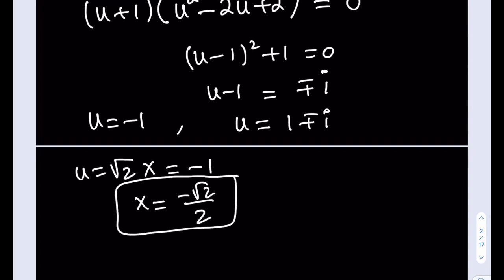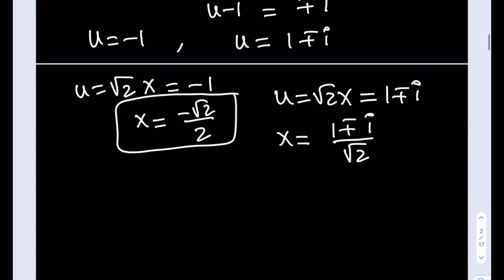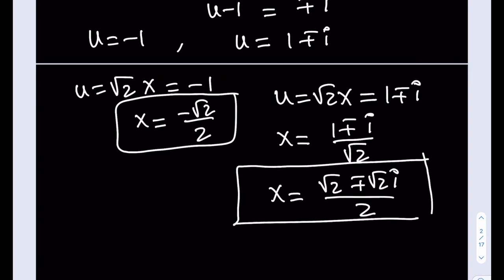And the complex solutions are going to be coming from this one. So if I go ahead and write it as 1 plus minus i, so now isolate the x by dividing both sides by root 2, and you're going to be getting this equation. If you want to rationalize the denominator, I mean, no big deal, but you're going to be getting multiplied by root 2. You're going to get √2 plus minus √2i divided by 2. And these are going to be the complex solutions to our equation.